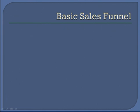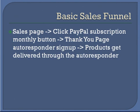Let's talk about the basic sales funnel — how are you going to deliver your product, from the point of the person landing on the sales page, to going to the PayPal button, to getting delivered the content. Normally, this is what it looks like: somebody goes to your sales page, they click on the PayPal subscription button — it can be monthly, weekly, and so forth. Then they pay, they're sent to the thank you page, which includes the autoresponder sign-up. And then through the autoresponder, they are delivered products. So that's what the basic fixed-term membership site looks like.